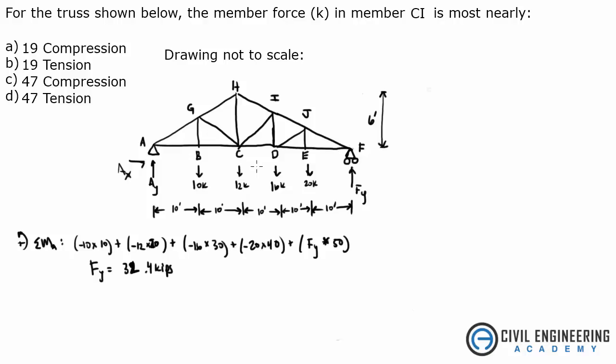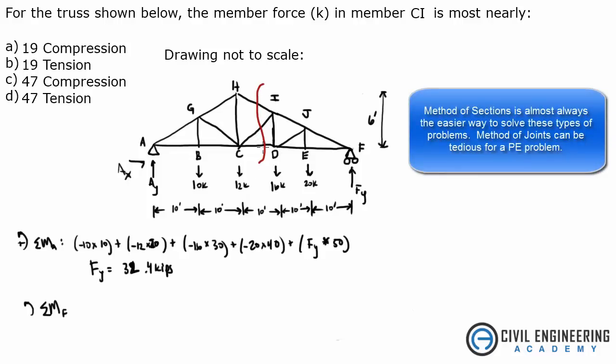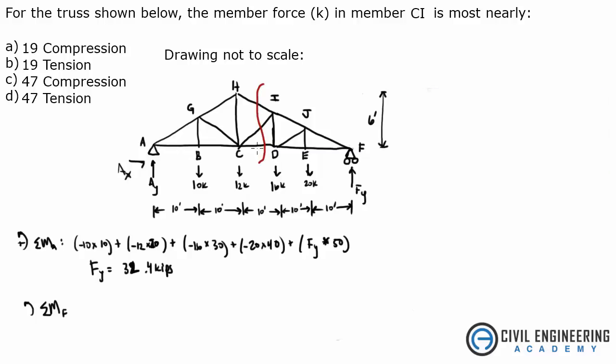Next thing I am going to do is take the sum of the moments about F. The reason why I am going to do that is because what I am going to do is make a cut right here. You can either do this by method of joints or method of sections. I am going to make a cut right through here, through these three members. Method of sections says you can cut through three members that are unknown and let's go ahead and do that. So we made that cut.